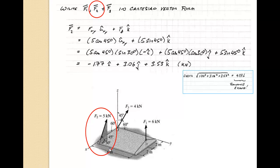F2 must be decomposed: the Z component is 5 times sine of 45 degrees, and the component lying in the XY plane is 5 cosine 45 degrees, using a general unit vector. That unit vector is then broken down into X and Y components by taking the sine and cosine of 30 degrees. The X component is in the negative I direction, the Y component in the positive J direction, and the Z component in the positive K direction. Evaluating these gives us the F2 vector, though rounding errors arise from the numerical values of cosine 45 and sine 30.